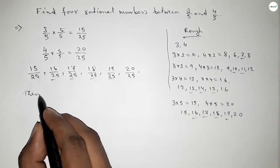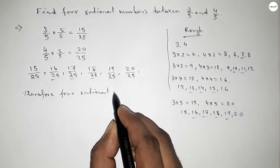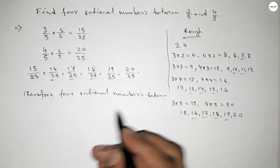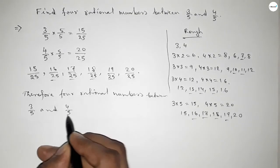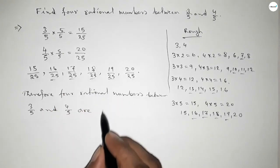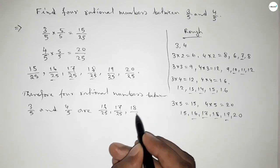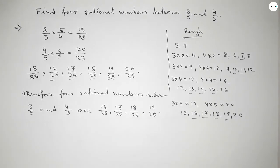Among these, the four required rational numbers between 3 over 5 and 4 over 5 are: 16 over 25, 17 over 25, 18 over 25, and 19 over 25. This is the process to find four rational numbers between 3 over 5 and 4 over 5.